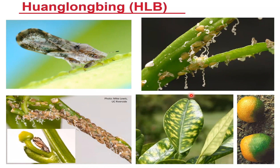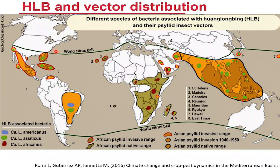Let's start with Huanglongbing. It's a disease of citrus caused by a bacterial pathogen that's spread by tiny insects called psyllids. It's a problem in most of the citrus growing world, demarcated by the world citrus belt. As it's a vector-borne pathogen it needs a competent vector in place to spread, and that vector has spread throughout the world. The vector we're particularly interested in is the Asian citrus psyllid, which originates from Asia but has spread out into South America and North America. I'm going to focus today on the situation in Florida.